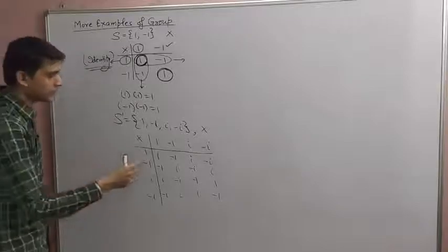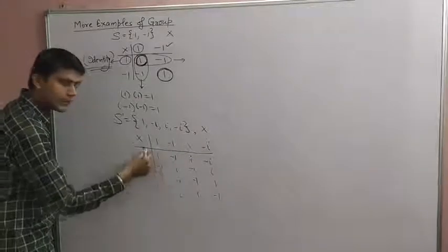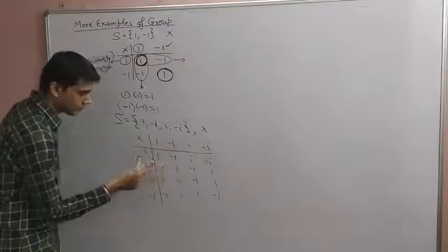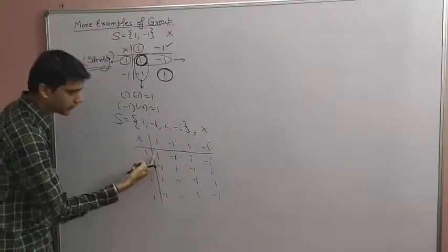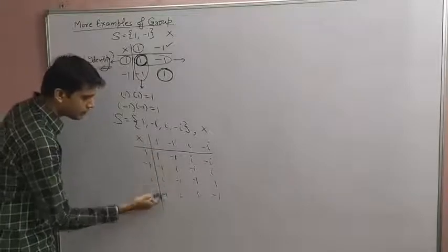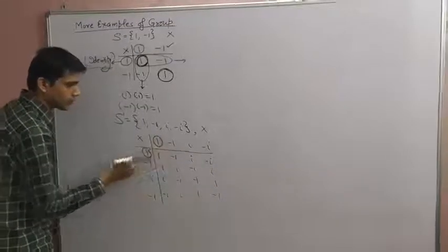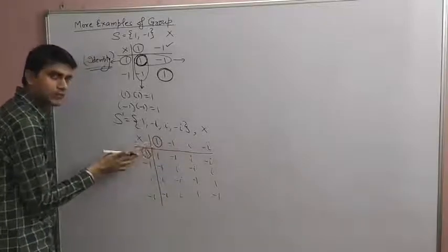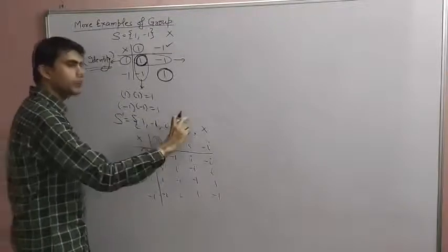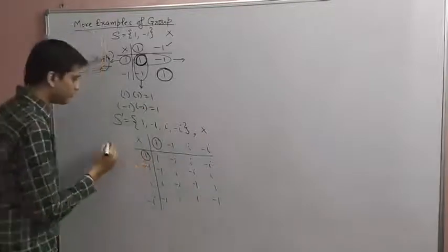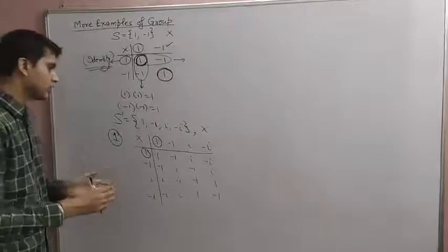To find the identity, look for a row that matches the title row and a column that matches the side column. The first row — 1, -1, i, -i — matches the title row, and the first column matches the side column. The corresponding element is 1, so 1 is the multiplicative identity for S'.